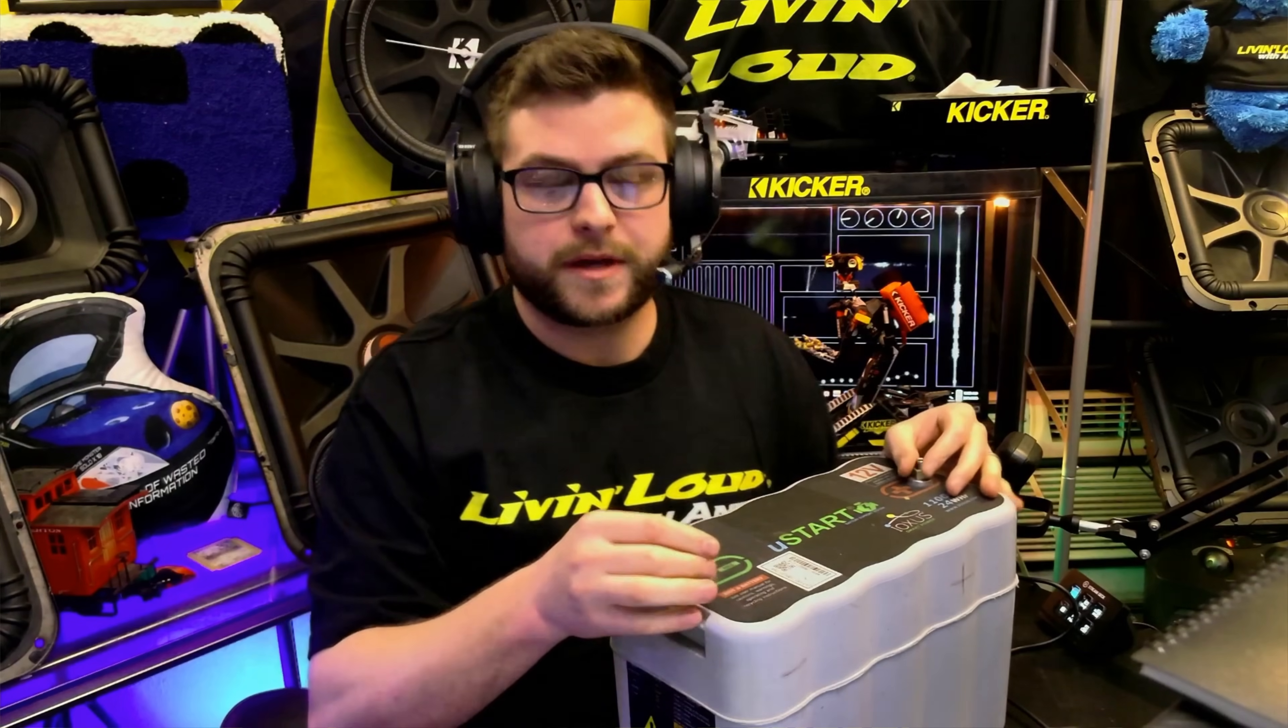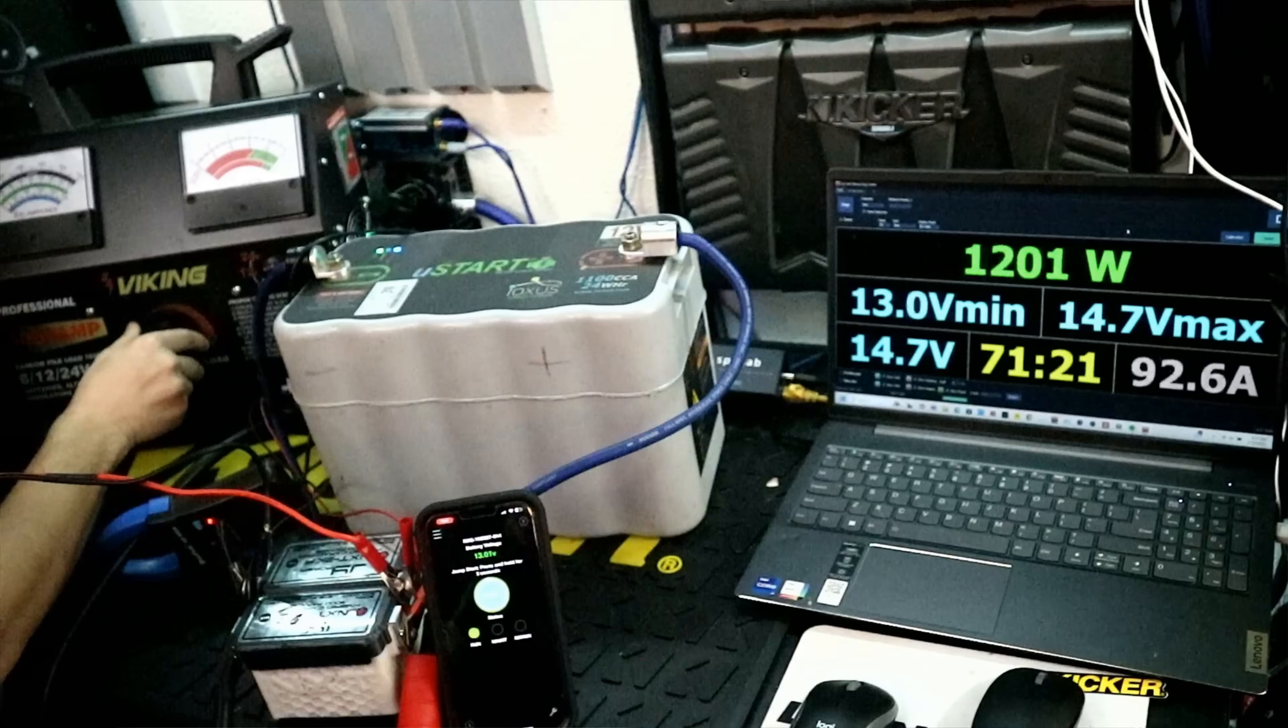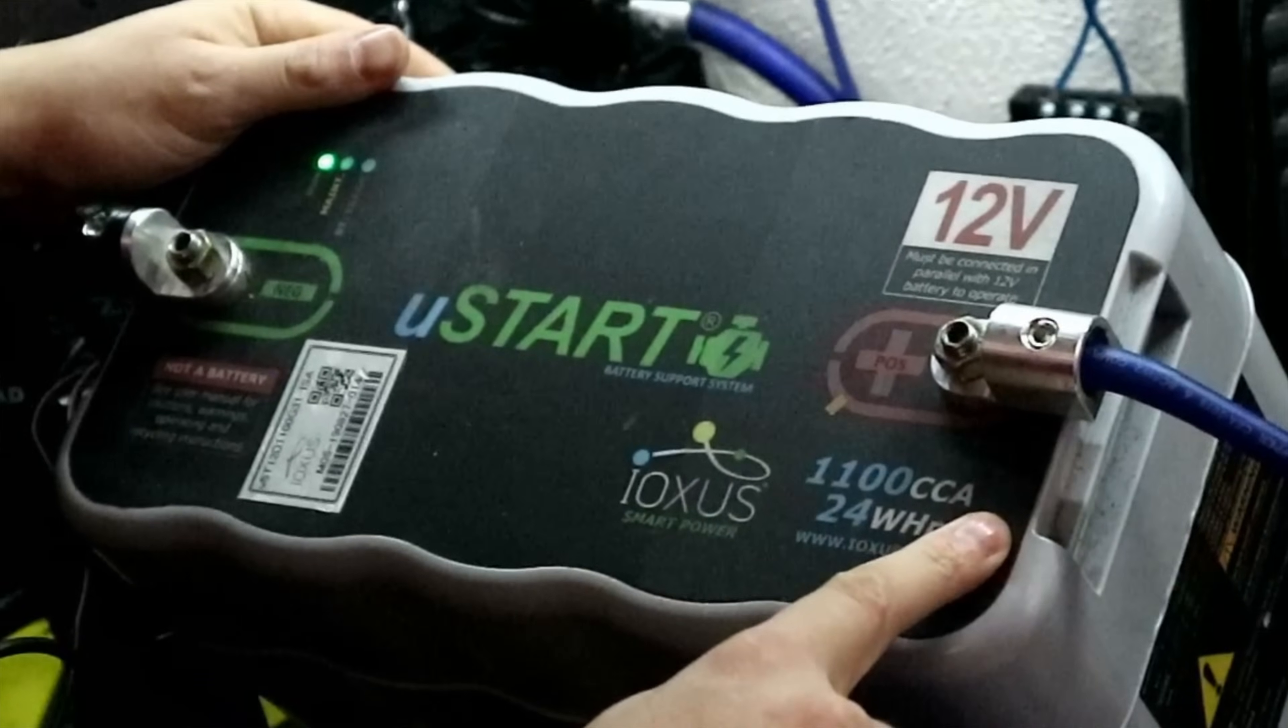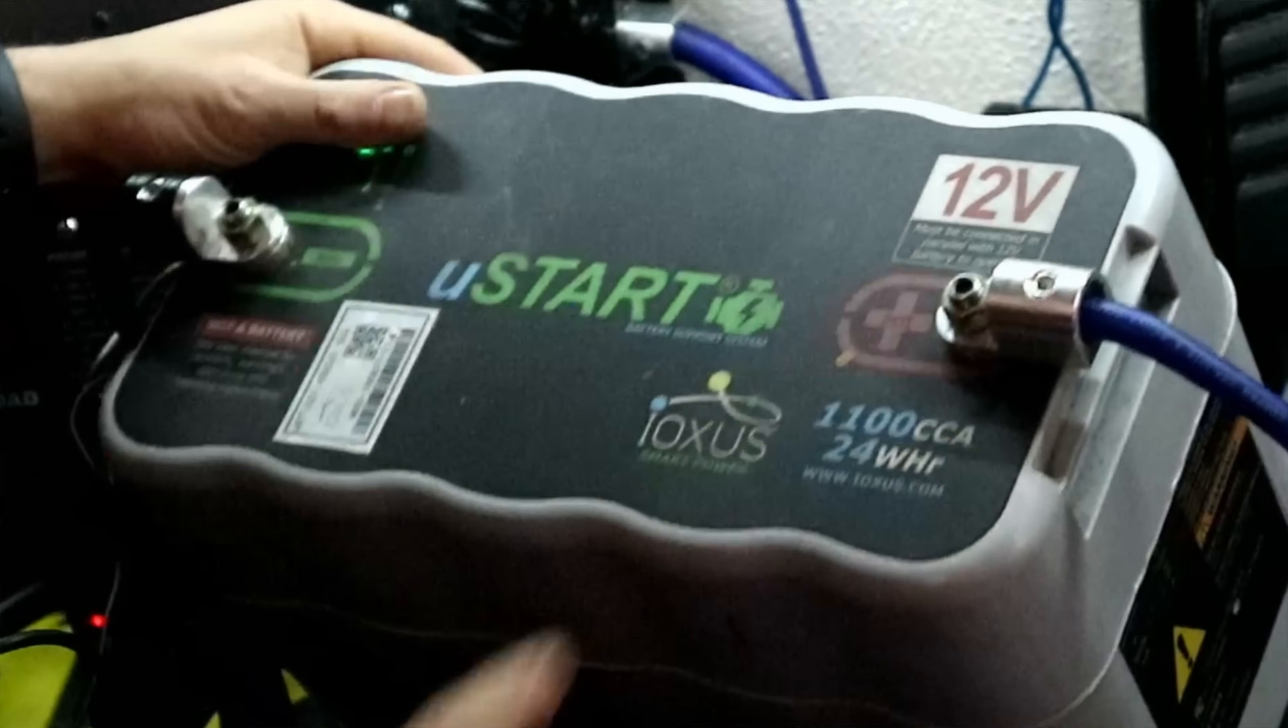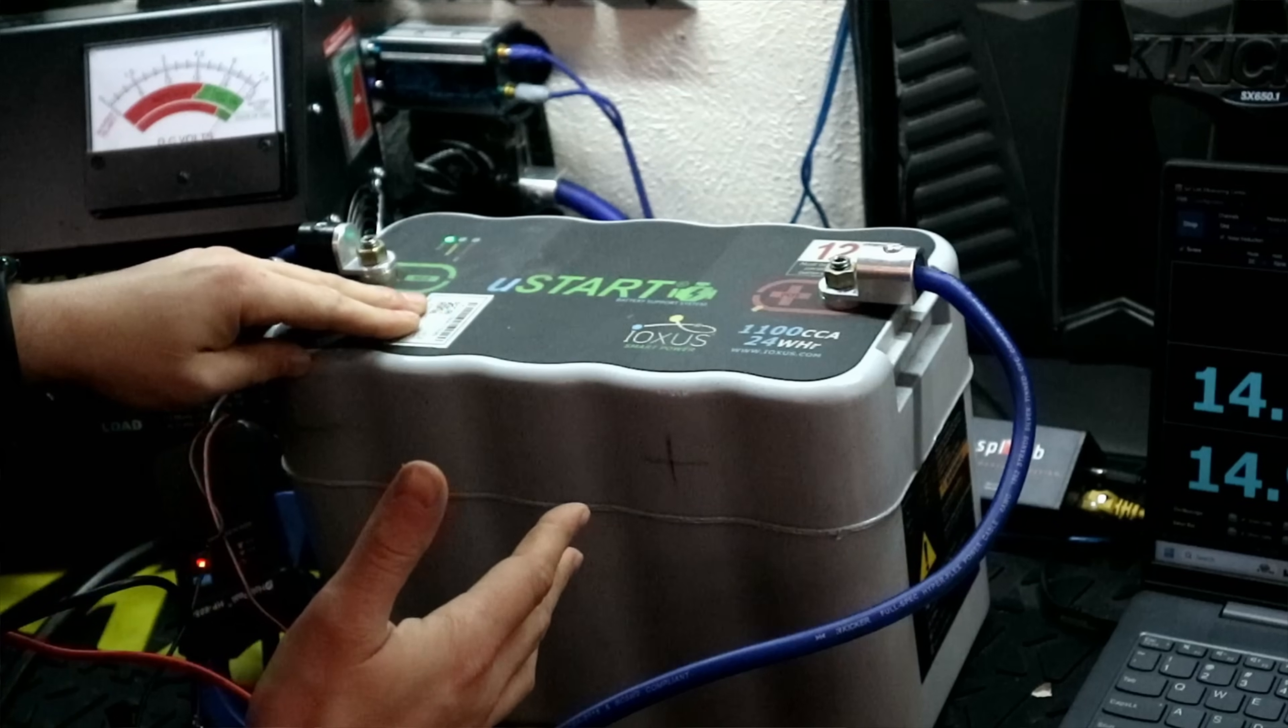We're going to head over to the test bench, and we're going to test the ultra capacitor UC31, finally, and see if it's even worth the $400. Is it worth to put a capacitor in your car? Let's find out. On the front, it says U-Start Ioxys, 1100 crank amps, 24 watt hours. So how much power can this deliver, and what is it actually good for?